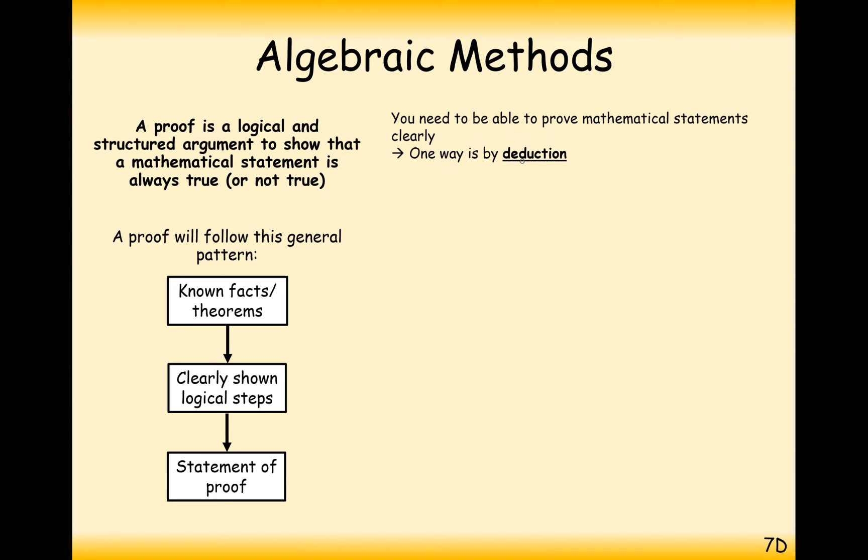One way is by deduction. So what we're going to look at today is a statement that you've probably seen in GCSE before. Prove that the product of two odd numbers is odd. Okay, so just to show you what this looks like, five times seven is 35, and when you do this with any two odd numbers, you get another odd number. However, this thing here is not good enough for a proof. You're not going to be able to go through every single pair of odd numbers and prove that it's always odd. So we need some algebraic way of doing this instead.